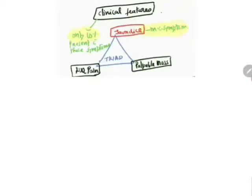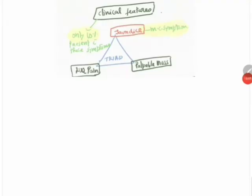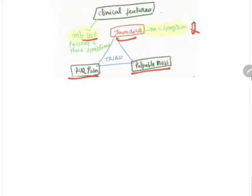Regarding clinical features, the classic triad of choledochal cyst comprises right upper quadrant pain, a palpable mass, and jaundice. Jaundice is the most common symptom among these. However, not all patients present with the full triad — only about 10% of patients present with this classic triad.